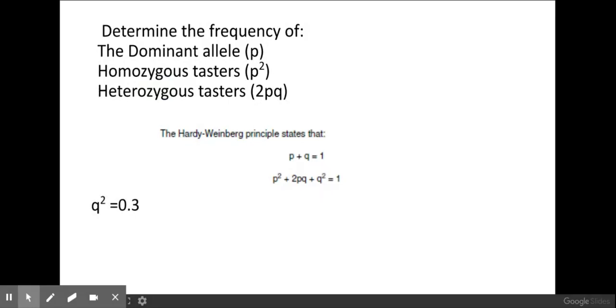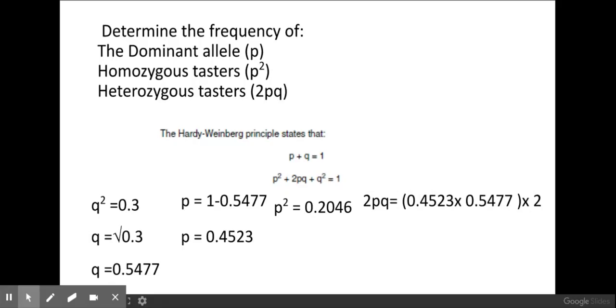If I know that q² is 0.3, I can then calculate what q is by square rooting that 0.3 to give me 0.5477. Now if I know what q is, I can work out what p is by using this top formula here, using 1 take away what I know my value is for q, which will give me 0.4523. If I know what p is, I can then calculate the rest. I then need p². So in order to get p² I square my p value, and then in order to get my heterozygous tasters, my 2pq, I simply do 2 times p times q. So that's how to answer this question.